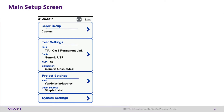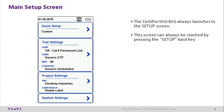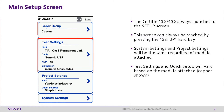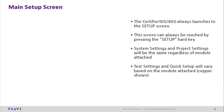The certifier always launches to the Setup screen; however, this screen can always be reached by pressing the Setup hard key. System settings and project settings will always be the same regardless of the modules attached. However, test settings and quick setup will vary based on the module attached. Copper is currently being shown.